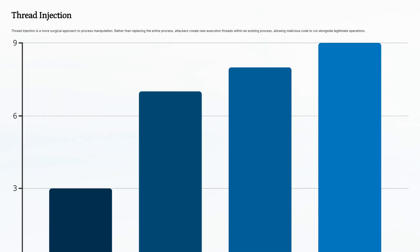Thread injection is more surgical. Instead of replacing the whole process, the attacker just creates a new thread inside an existing one. This lets malware run alongside legitimate code, making it harder to detect.